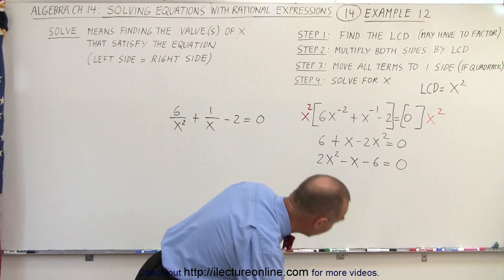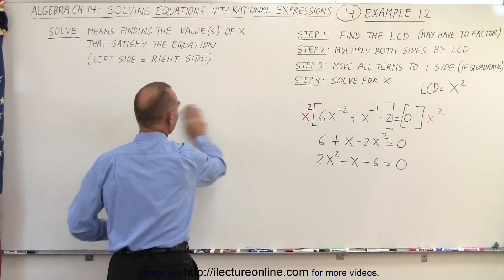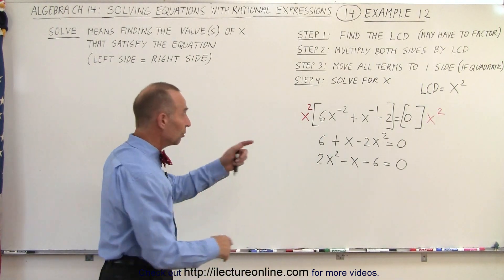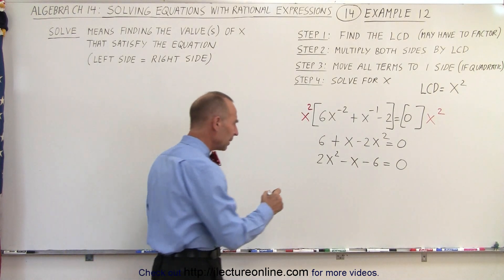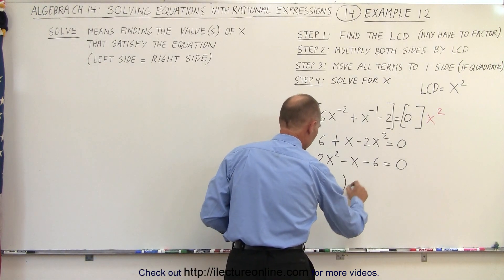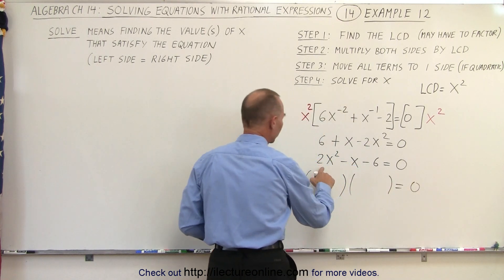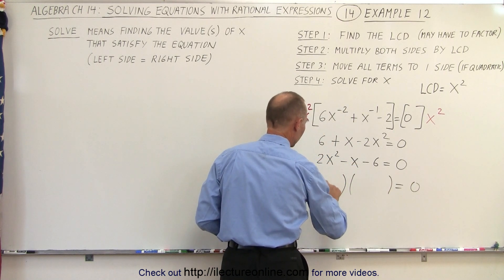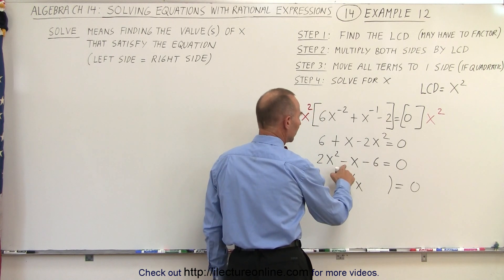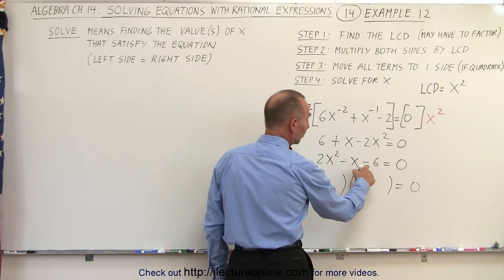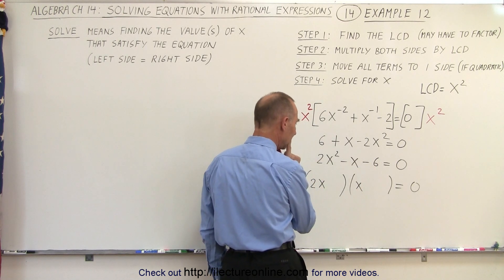And now let's go ahead and erase this part right here, because we may need the room. And what we need to do now is factor that. We might be able to guess, so let's see. We're going to have a binomial times a binomial here equals 0. We're going to need a 2x times an x. This indicates that we have a plus and a minus, and when we add, we get a minus 1.